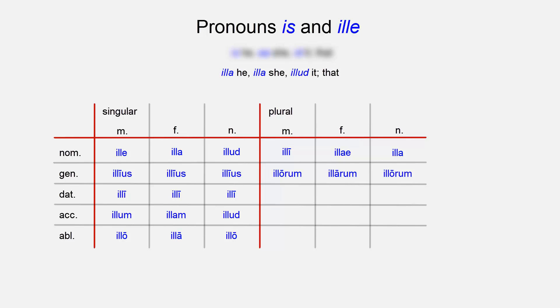The dative is the same for all three cases: eelis. The accusative masculine is eelos, the feminine eelas, and the neuter eelah. The ablative is also the same for all three cases: eelis.